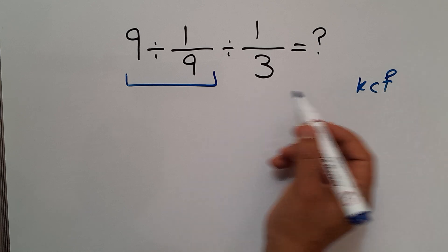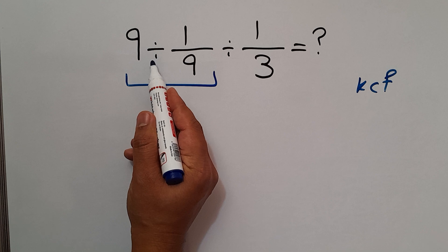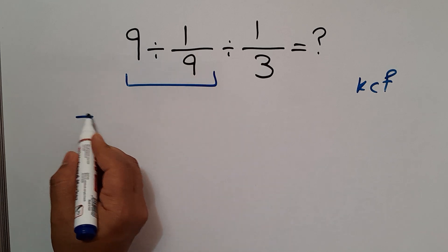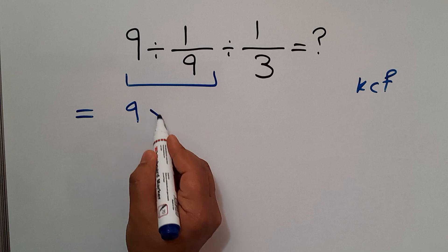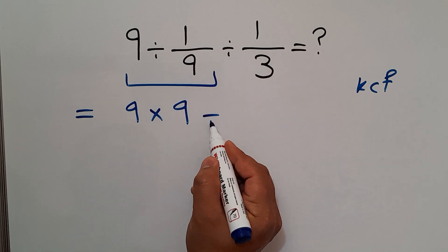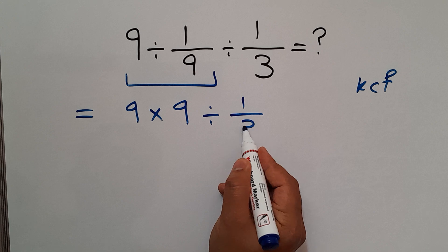So we can write 9 times 9, and let's recopy this: divided by 1 over 3.